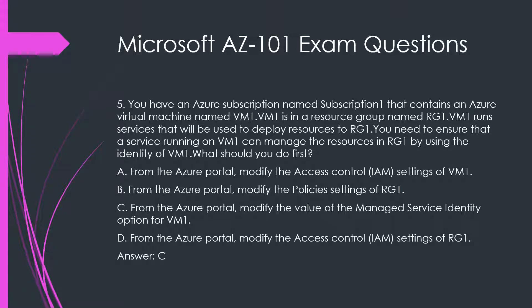Question 5. You have an Azure subscription named Subscription 1 that contains an Azure Virtual Machine named VM1. VM1 is in a resource group named RG1. VM1 runs services that will be used to deploy resources to RG1. You need to ensure that a service running on VM1 can manage the resources in RG1 by using the identity of VM1. What should you do first?